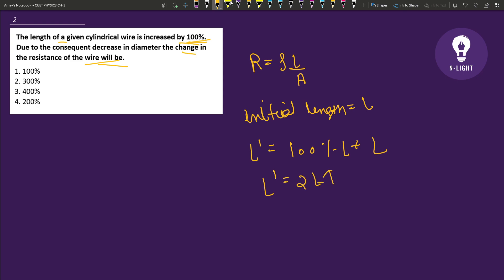If our length is twice, then the area will be less. If we have new area, what will be A by 2?